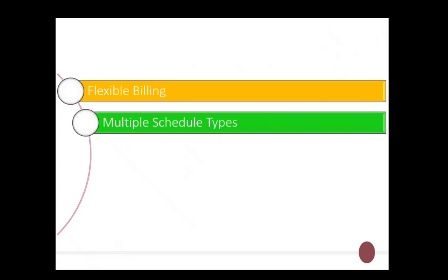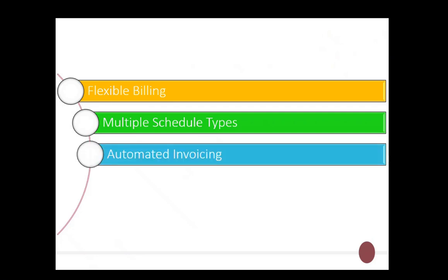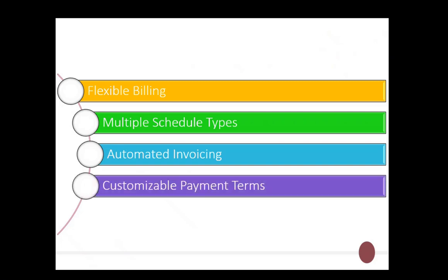Billing schedules provide flexible billing and support multiple schedule types, such as a fixed schedule — for example, monthly billing — or milestone-based schedules, where an invoice is generated after a project phase is completed. With automated invoicing, once set up, invoices are automatically generated according to the schedule, reducing manual work.